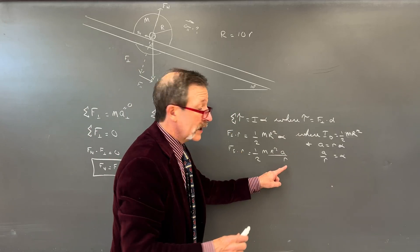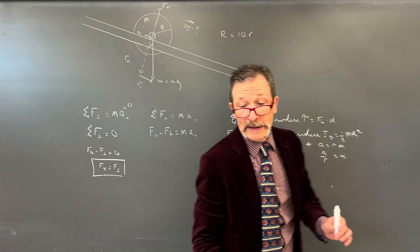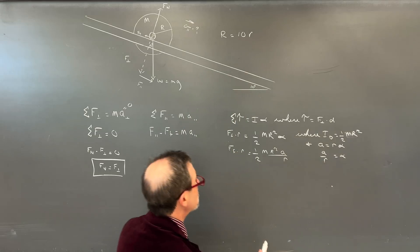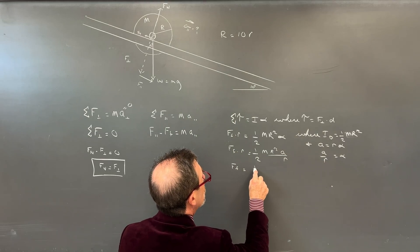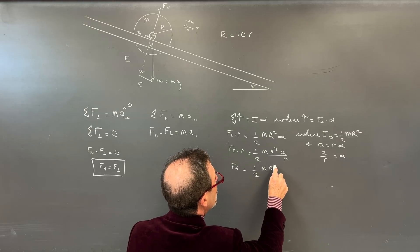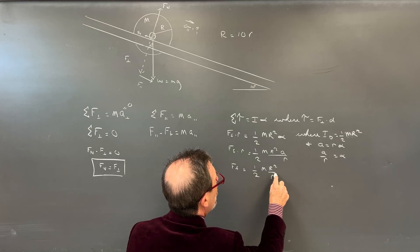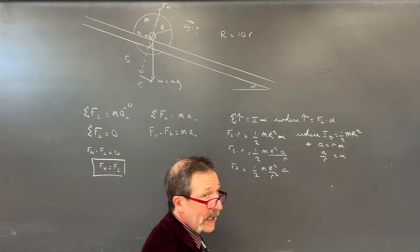So alpha can really be thought of as alpha is a all over our radius. Now, if we're talking about the acceleration, remember that rod is actually touching the board right here. That's going to tell us what our acceleration is, not the big R. The big R right here is really going to be dealing with our inertia.